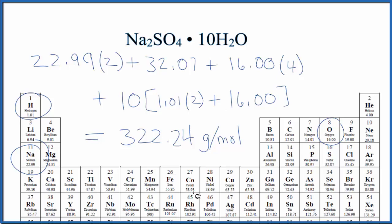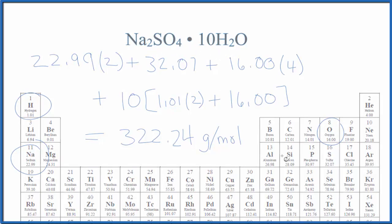My periodic table rounds to two decimal points. If you use a different periodic table, you might get a slightly different answer out here. This is Dr. B with the molar mass for Na2SO4·10H2O, sodium sulfate decahydrate. Thanks for watching.